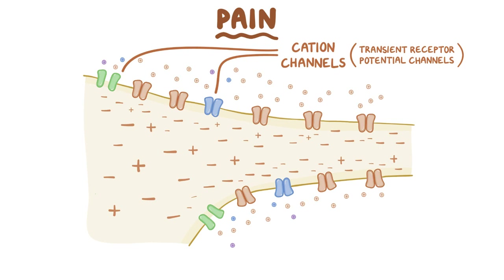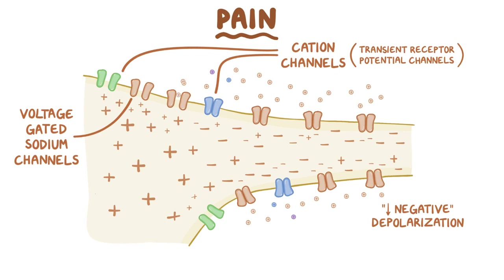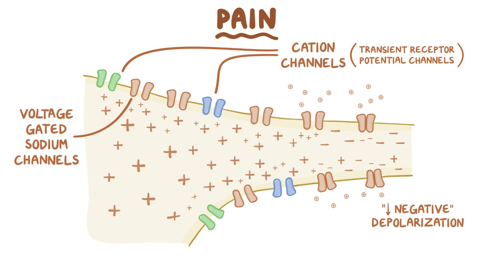This allows sodium and other positive ions to flow into the cell. The extra positive charge that flows in makes the cell less negative, which is called depolarization. This depolarization causes nearby voltage-gated sodium channels to open up as well, setting off a chain reaction that continues down the entire length of the axon.